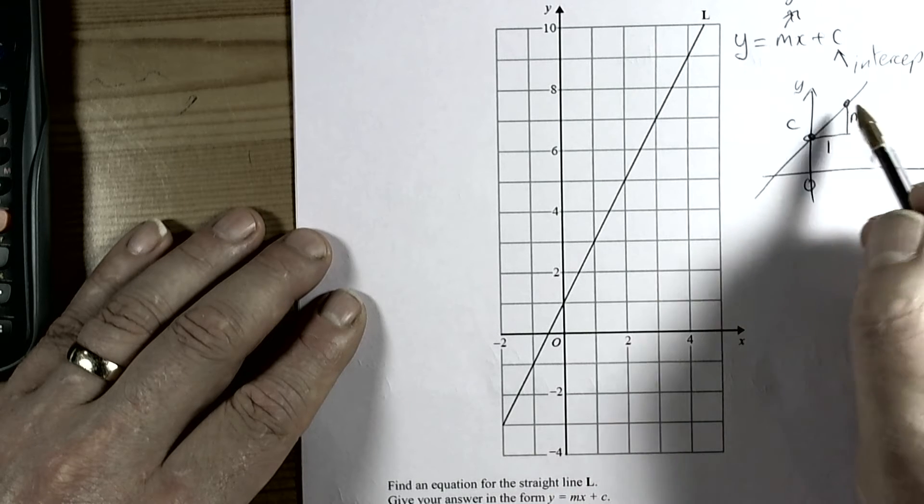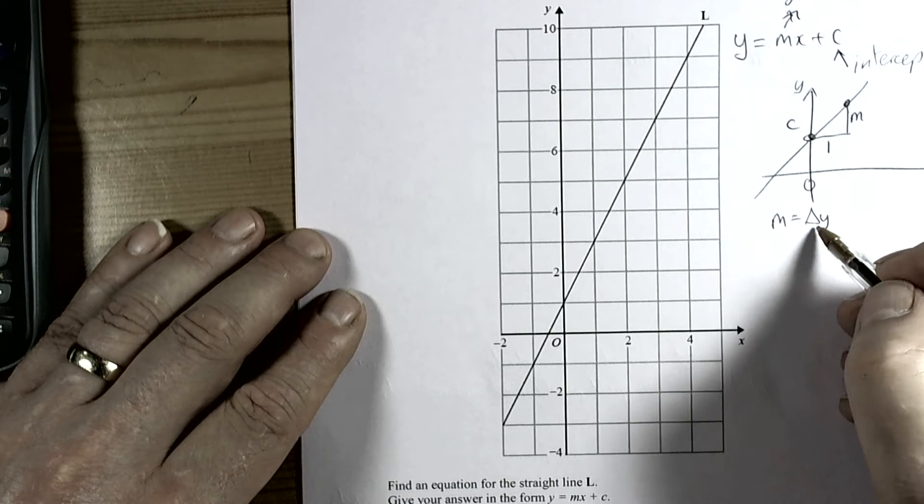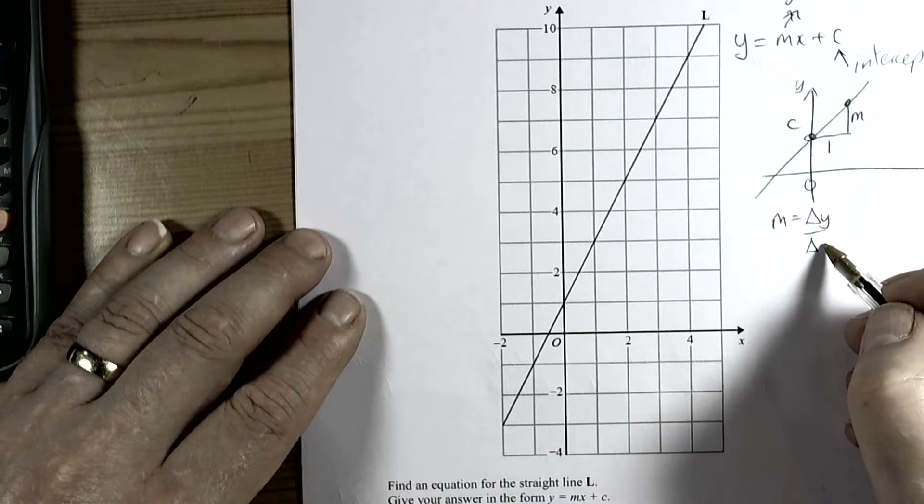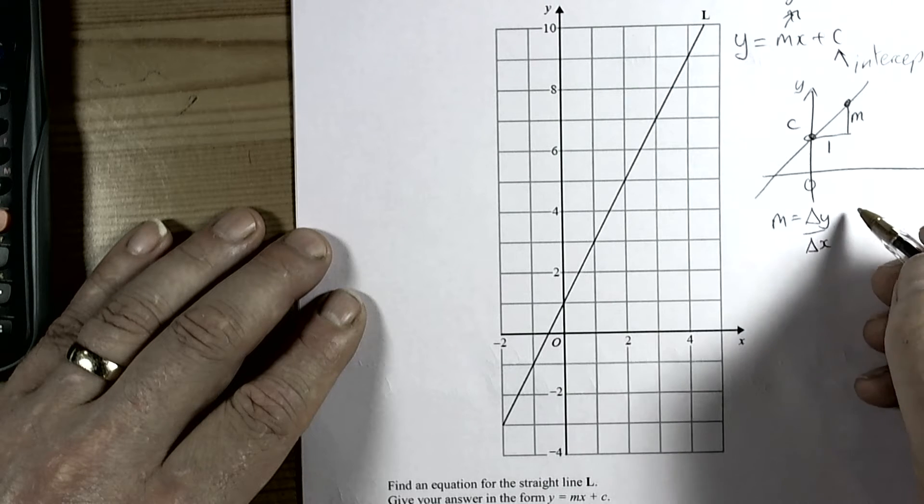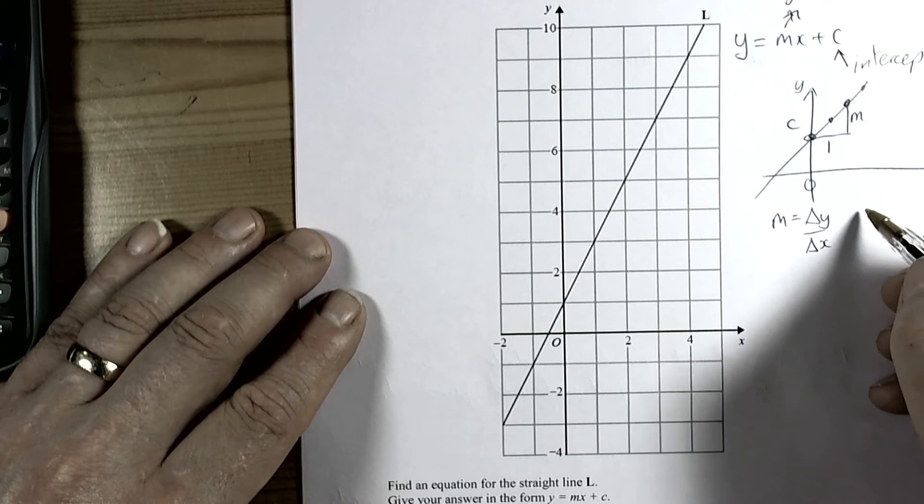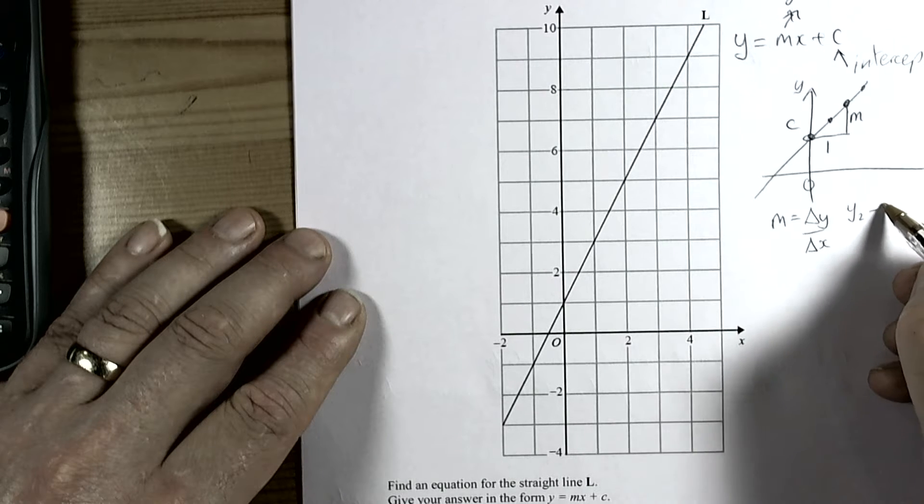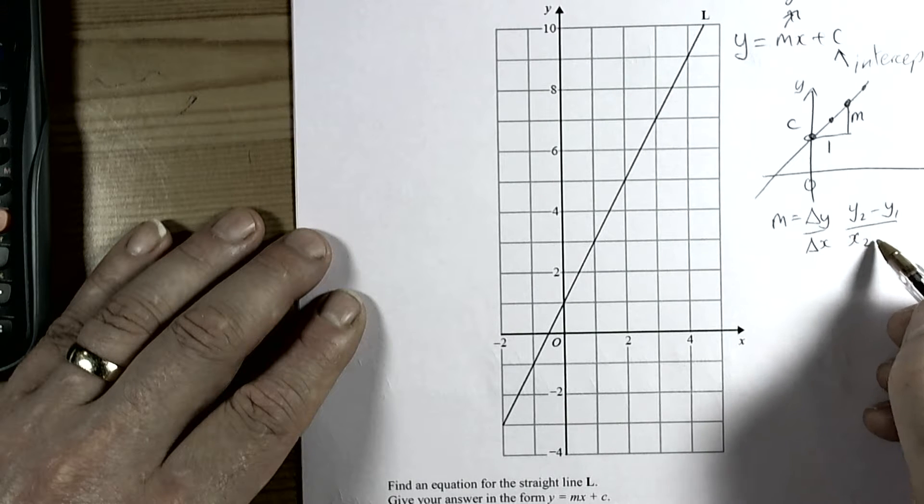The concept to find the gradient is we have a formula: we do the change in the y coordinates divided by the change in the x coordinates. Basically, we choose two coordinates on the line, and we end up doing the difference in the y coordinates divided by the difference in the x coordinates.